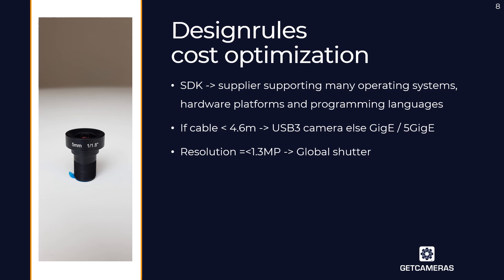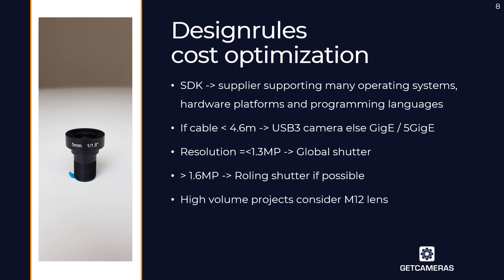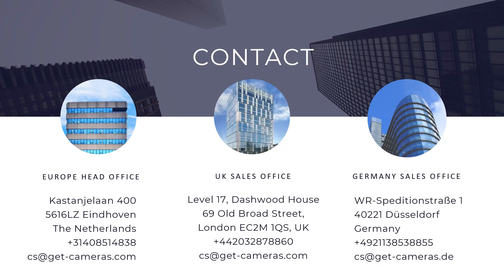If your camera resolution is 1.3 megapixel or lower, go for a global shutter camera. If it's 1.6 megapixel or higher, use a rolling shutter camera if that's possible in your application. For high-volume projects, consider M12 lenses to reduce lens cost. Matching the field of view size with the image sensor and lens can also reduce cost.